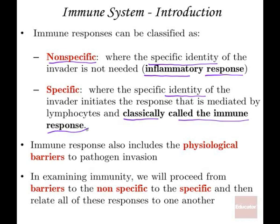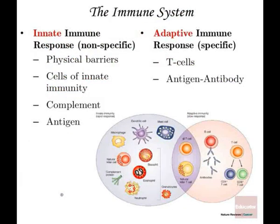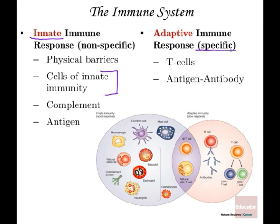The immune system also includes the physiological barriers inherent in the living body. We'll begin by illustrating the barriers, then discuss the non-specific arm, and then the specific arm. The innate immune response consists of physical barriers, various cells of innate immunity, complement, and the antigen itself. These innate responses are inherent to the organism and don't require identification of the pathogen. The adaptive immune response, on the other hand, does require identification of the pathogen and elicits a very unique and particular reaction.